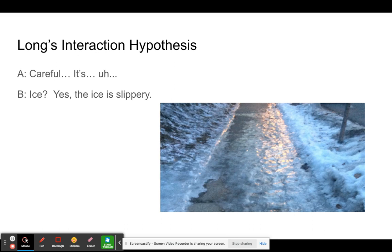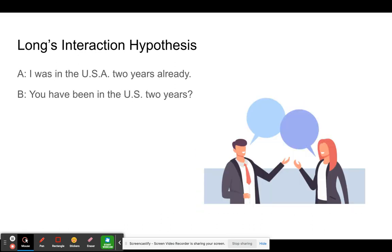Sometimes the learner says something unclear because of incorrect grammar or vocabulary, but with interaction, the other person can ask a clarifying question that actually provides the grammar form or vocabulary the learner needs. For example, imagine a learner says, 'I was in USA two years already.' The native speaker might respond, 'Oh, you've been in the US for two years already?' Notice how this recast provides the learner with a model of the present perfect grammar form she needed but couldn't use.